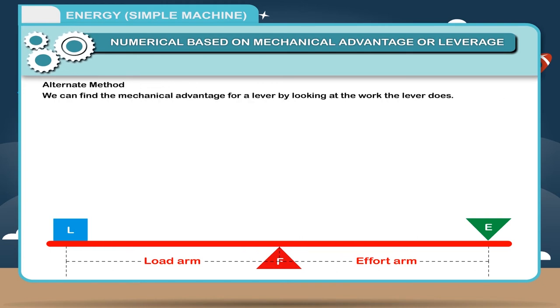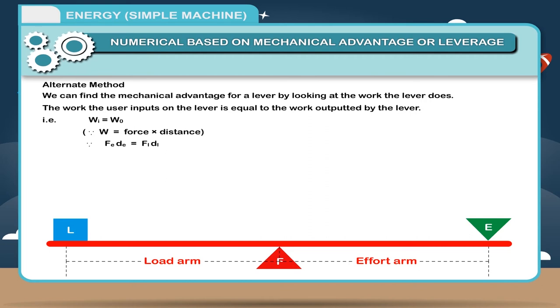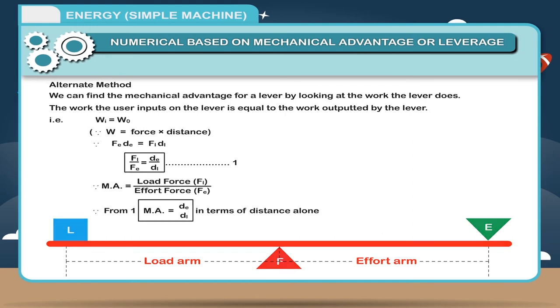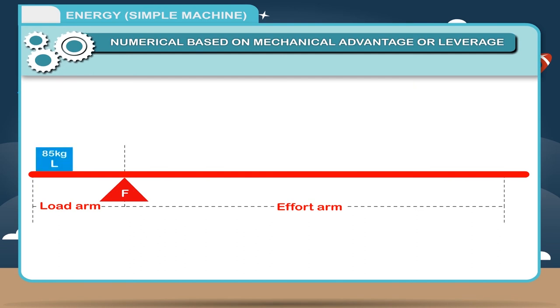Alternate method: We can find the mechanical advantage for a lever by looking at the work the lever does. The work the user inputs on the lever is equal to the work outputted by the lever. That is, work I is equal to work O. Since work is equal to force into distance, therefore FEDE is equal to FIDI. FI upon FE is equal to DE upon D1. Since mechanical advantage is equal to load force divided by effort force, therefore, from equation 1, mechanical advantage is equal to DE upon DI. In terms of distance alone.